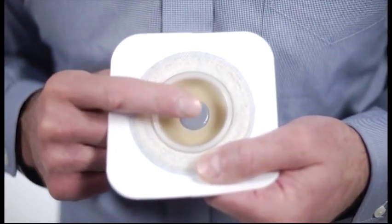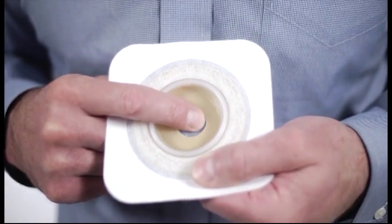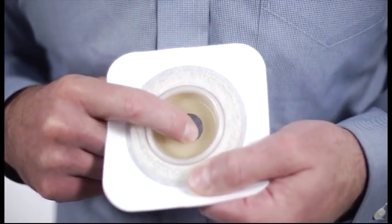If you are using a convex wafer, you will first need to depress the center of the shield before rolling the adhesive.